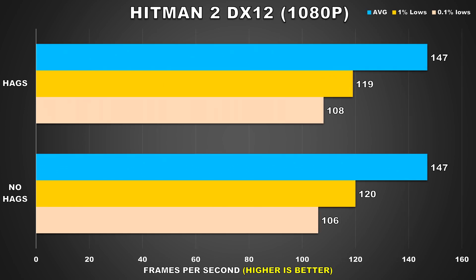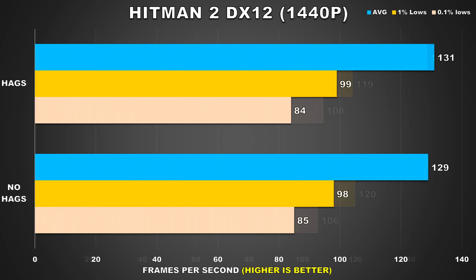Moving on to Hitman 2, and the results are also the same — to nobody's surprise. This is probably one of the most boring benchmarking videos I've done, which is why I only benchmarked a handful of games rather than the usual 10-15 titles. At 1440p, the results for Hitman 2 are pretty much the same as what we saw with Far Cry 5.